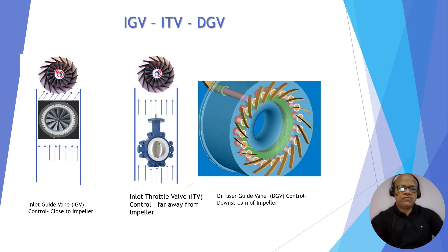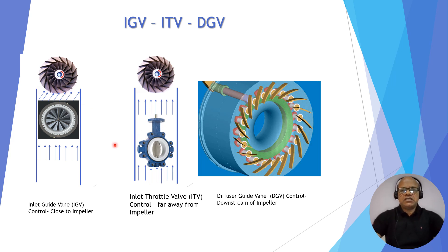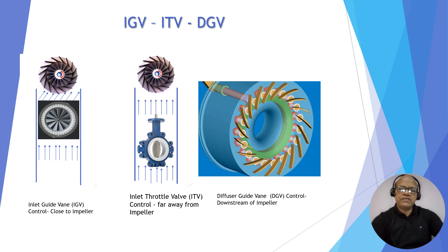You can see the first picture is for IGV, the second picture is for ITV, and the third is the diffuser guide vane (DGV). In the case of IGV, you can see the IGV is installed very close to the impeller, because the gas is turned in the same direction as the direction of rotation — that is called the pre-whirl condition. In the case of ITV, the flow is always axial, so it is not necessary to install it very close to the impeller; it can be installed further away. In the case of the diffuser, it is always installed on the downstream side, after the impeller.